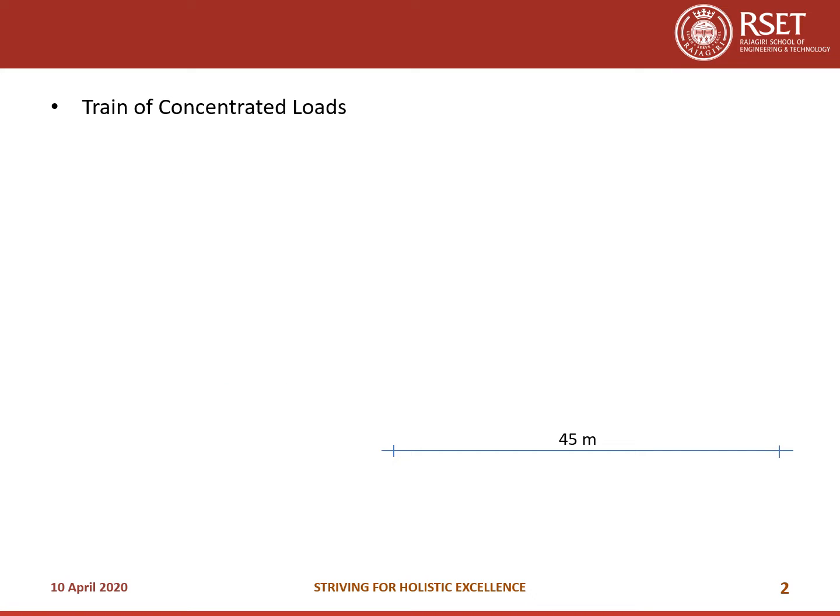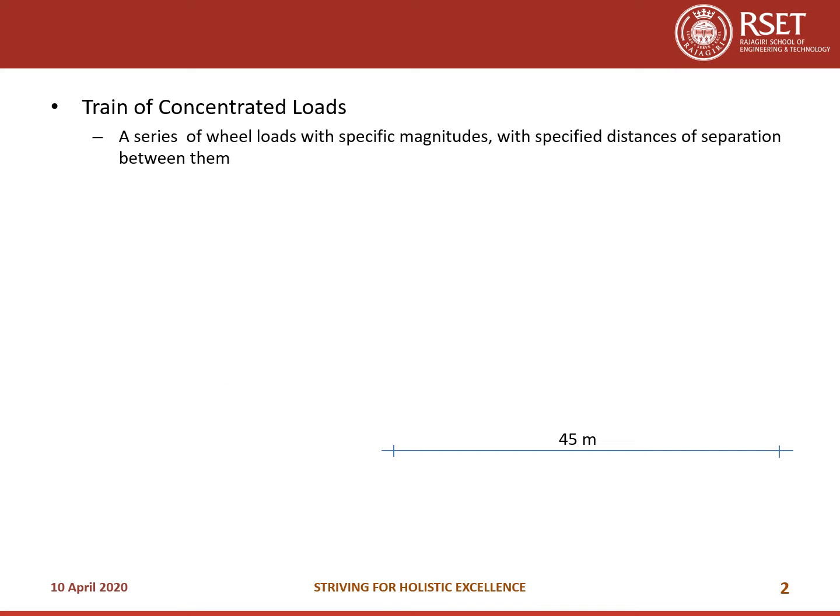What do you mean by train of concentrated loads? It is a series of wheel loads with specific magnitudes and specified distances of separation between them. For example, vehicles with multiple axles act as multiple concentrated loads.